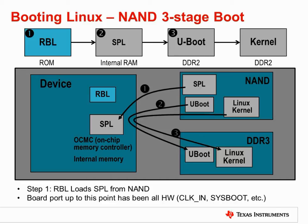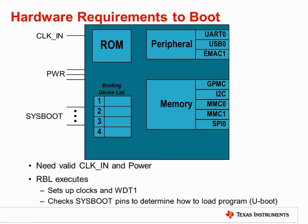From the standpoint of the board porting effort, the bring-up of a new board will require proper hardware configuration in order for the first step of the ROM bootloader to complete successfully. The ROM bootloader stage requires the application of a power source to the device as well as a valid clock input signal. The RBL will configure the watchdog timer and configure the internal clocking structure to a conservative fixed rate. The internal clocking will be reconfigured to the desired rate by either the SPL or, if there is no SPL, by uBoot. But at this stage, a clocking configuration is required, and since it is ROM programmed at the factory, a conservative rate must be used.